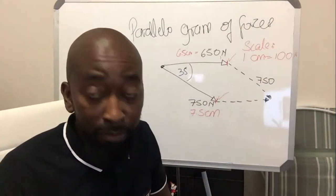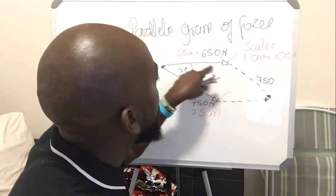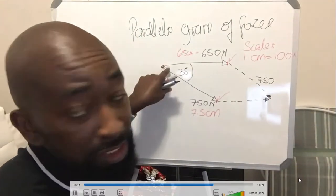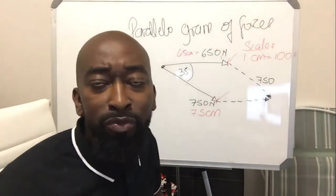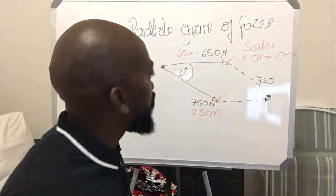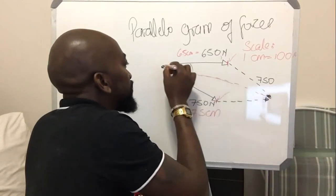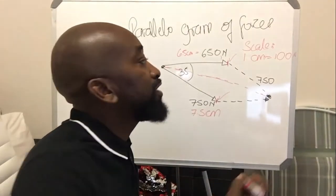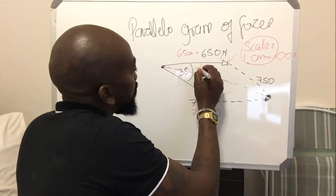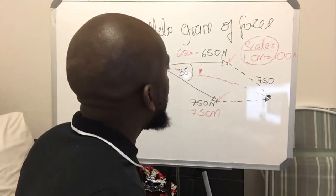Where these parallel lines combine and cross — that is the diagonal of the parallelogram. Using common sense: if an object is being pulled two ways, it tends to move somewhere in between — that diagonal line is your resultant force. Take your ruler, measure the diagonal in centimeters, then convert it back using your scale to Newtons. Also measure the angle using a protractor. How far is it from the 650 N force? Once you have that, you have the magnitude and direction of your resultant force.